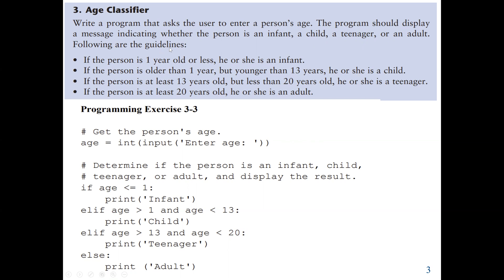Here are the guidelines. If the person is one year old or less, then it's an infant. If the person is older than one year but younger than 13, then it's a child. If the person is at least 13 years old but less than 20, then it's a teenager. If the person is at least 20 years old, then it's an adult. The only input we need is the age, so we use the input function and convert it to int because we are going to use relational operators for comparison.